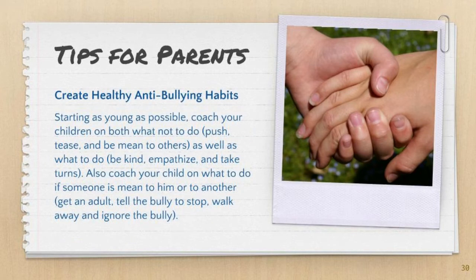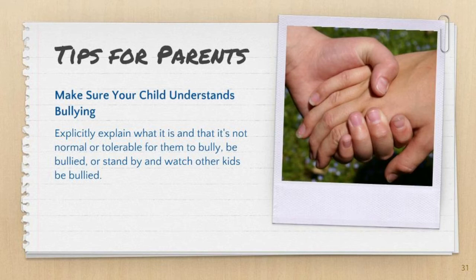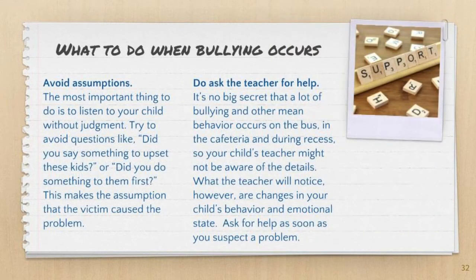Lastly, make sure they understand what bullying is and that it is not tolerable for them to bully or watch others be bullied. So what to do if bullying occurs? First, avoid any assumptions and just be there to listen without judgment. Try to avoid questions like 'did you say something to upset these kids?' or 'did you do something to them first?' — making them feel like they caused it somehow. Second, please always include the teacher with any concerns, as there is a huge chance the teacher may not be aware because a lot of bullying issues occur when the teacher is not around.